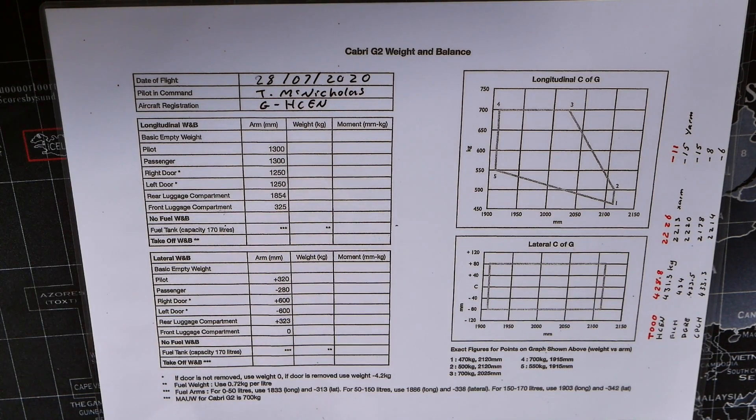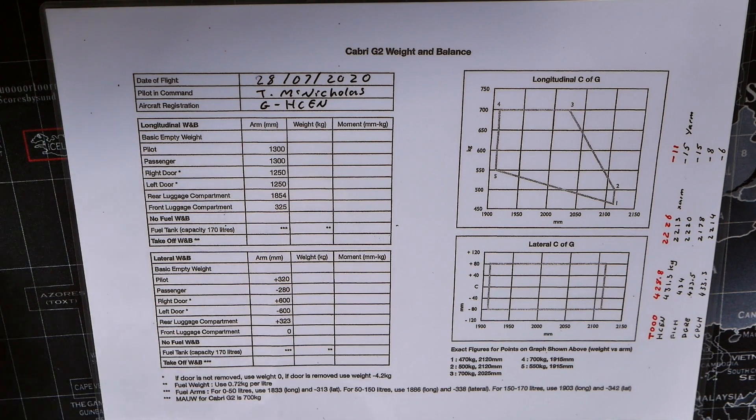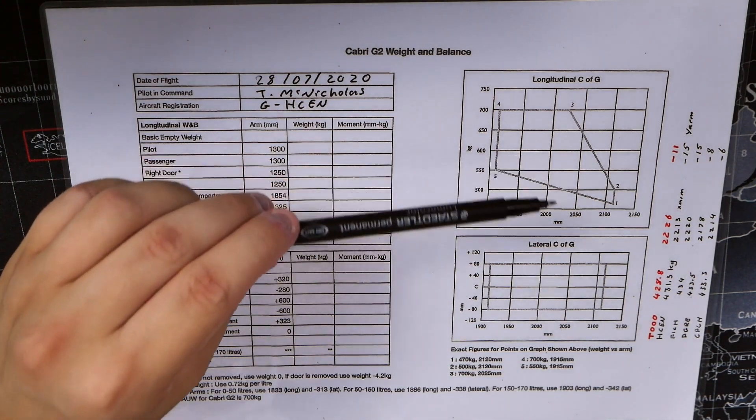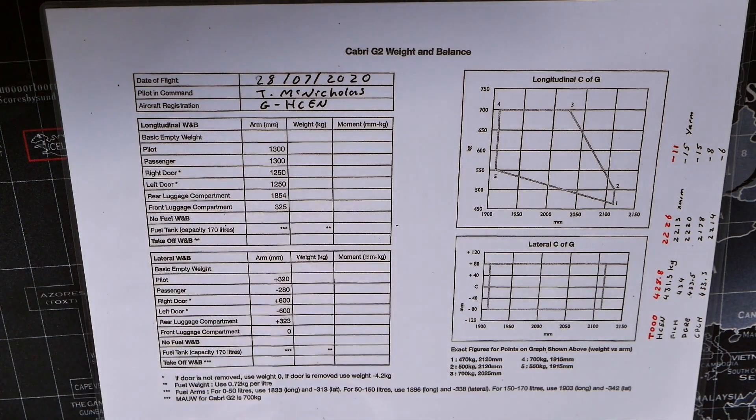The rest of the form is split up into three sections. We need to work out the longitudinal weight and balance of the aircraft, the lateral weight and balance of the aircraft, and then depending on the no fuel and takeoff weight and balances, we put those into the graphs to see whether they're within the limits allowed for the aircraft.